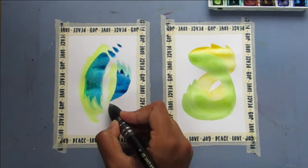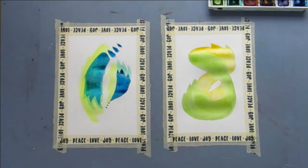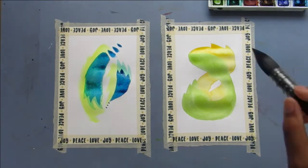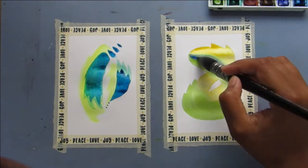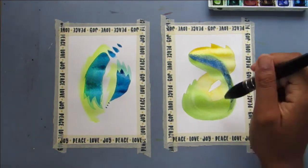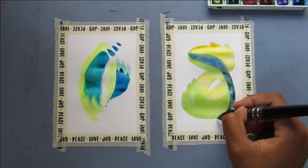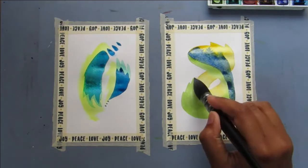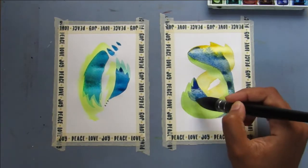For the warm colors I used Cadmium Yellow Hue, Sap Green, Cadmium Red Pale Hue, and Ultramarine Blue. If I miss anything it'll be in the description anyway along with the rest of the materials.